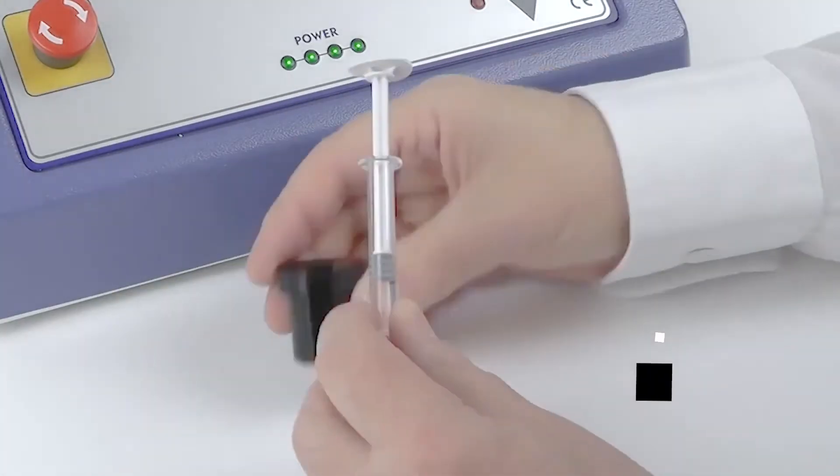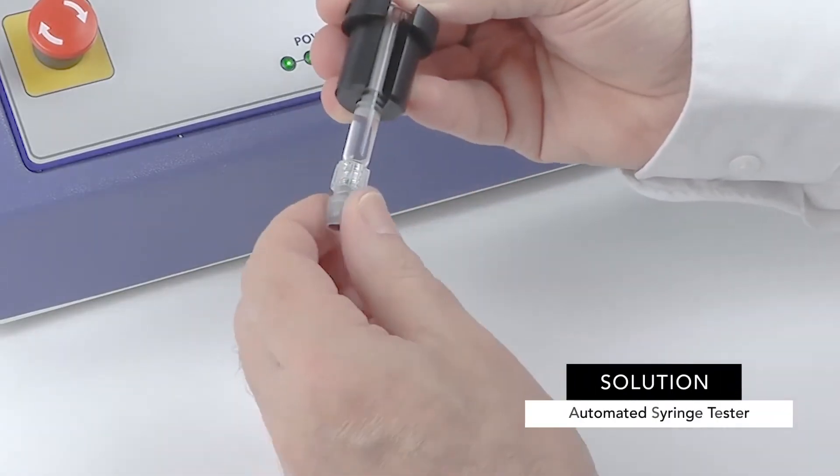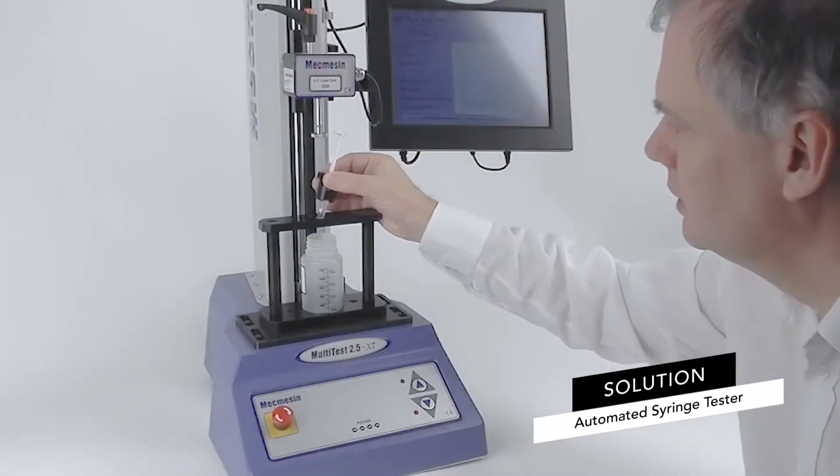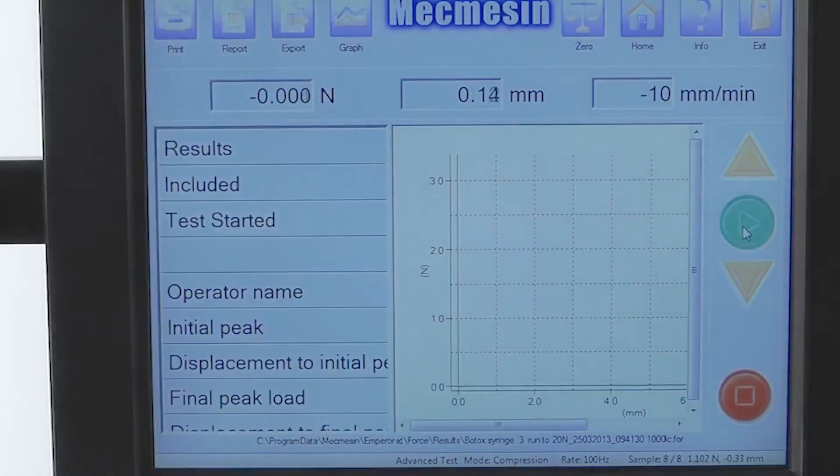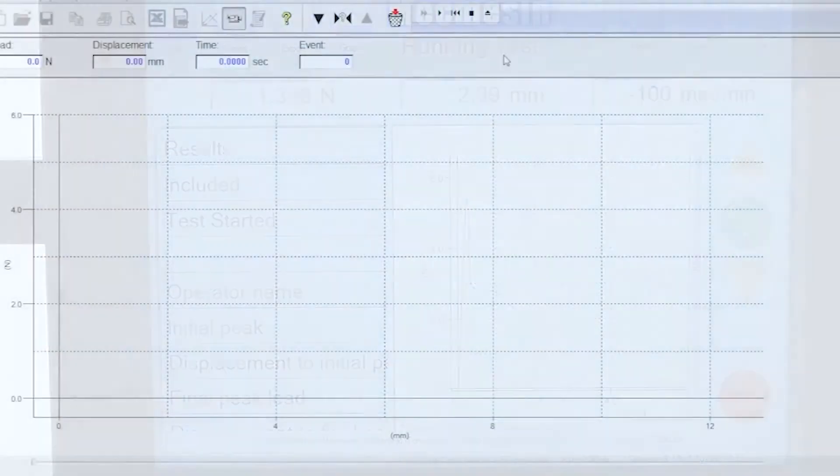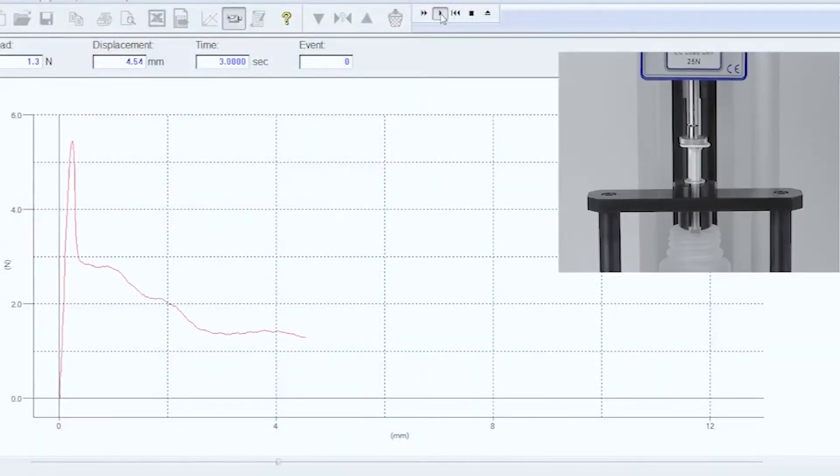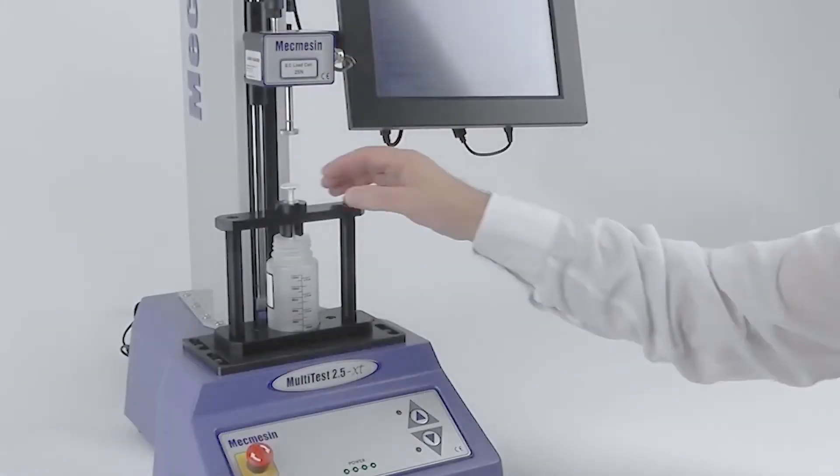Mecmesin offers a standalone test system for checking the break loose and glide force of an individual syringe. Operators manually load each syringe into the tester, start the test, and then unload the syringe when finished.